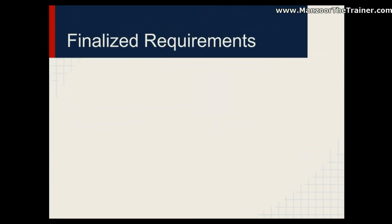In this video we will see how to identify the objects from the finalized requirements and how to find out the relationship between them. This is the major and key part of application development, whether it be a web app or Windows app. You need to identify the objects and find out the relationship between them for any kind of project, and this is the crucial role of an architect.